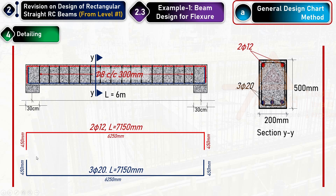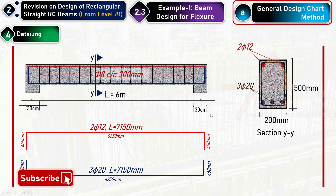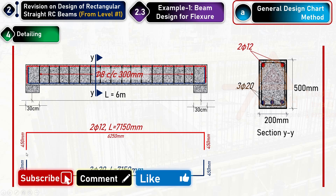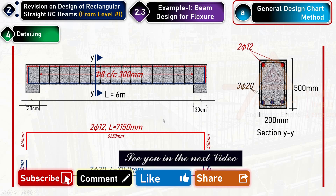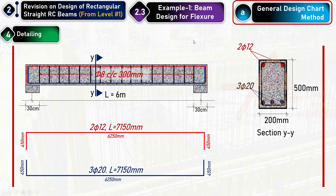The detailing is now complete. In practice, the internal dimension may be slightly less — around 440 mm — due to the stirrup diameter, but this approach is acceptable for typical design. Now we move to the second example: beam design for shear.